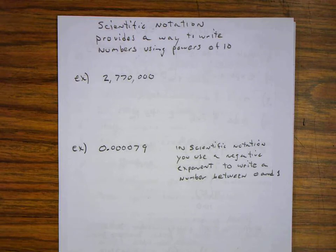So our first example, we have 2,770,000. We're going to write that in scientific notation. So our first step is to move the decimal point to get a decimal greater than 1 but less than 10.